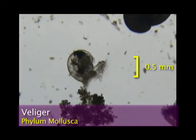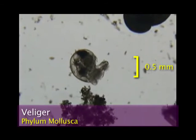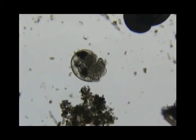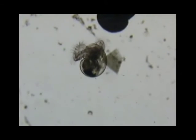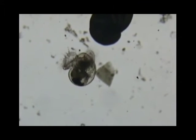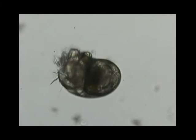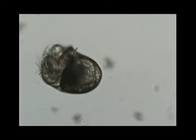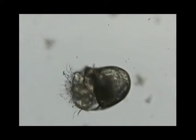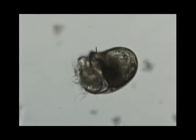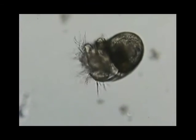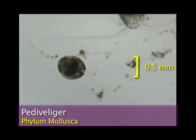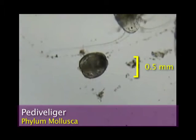A larval form of snails and bivalves is called the veliger. The veliger swims by using cilia lining four lobes projecting from its tiny shell. Do you see its beating heart? Here is a later stage of the veliger — this is most likely a clam or mussel.